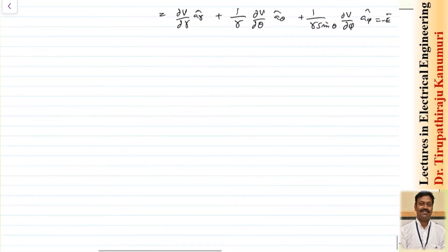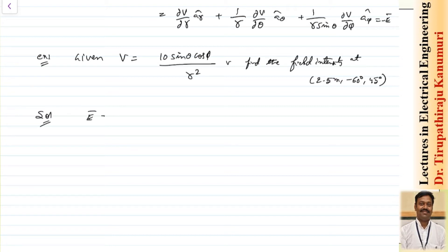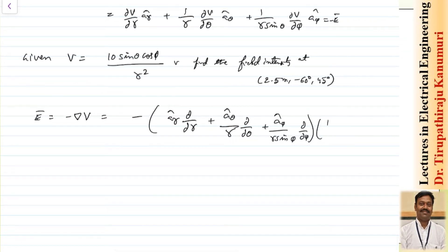To clarify how this formula is applied, let us take one or two examples. It is given that V equals 10 sinθ cosφ divided by R squared volts. We need to find the field intensity at the point (2.5 m, −60°, 45°). Seeing this, we can tell this belongs to the spherical coordinate system. So E equals minus grad V, where grad V uses the spherical operator: minus A_r ∂/∂r plus (A_θ/r) ∂/∂θ plus (A_φ/(r sinθ)) ∂/∂φ, all multiplied by the voltage 10 sinθ cosφ / R².